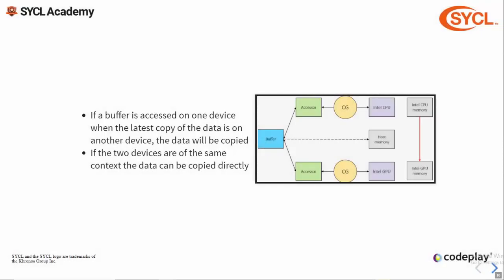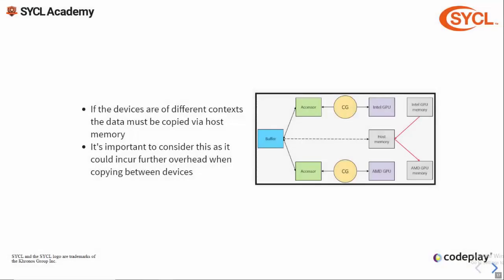Now we're going to look at a couple of different cases of using a buffer across different devices. If a buffer is accessed on one device and the latest modified copy is on another device, the data will be copied over. If the two devices are within the same context — for example both Intel — then the data will be copied directly from one to the other. However if the devices are from different contexts, the data will be copied via the host application. It's important to consider this as it could incur further overhead when copying between devices.